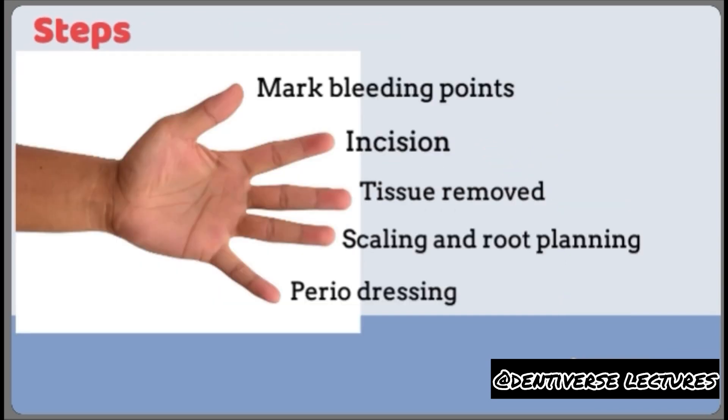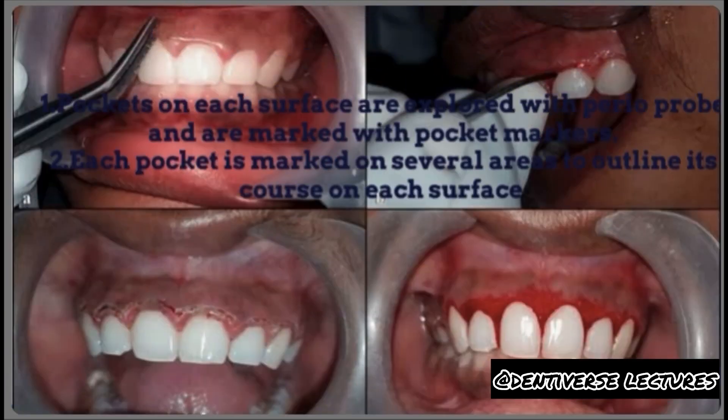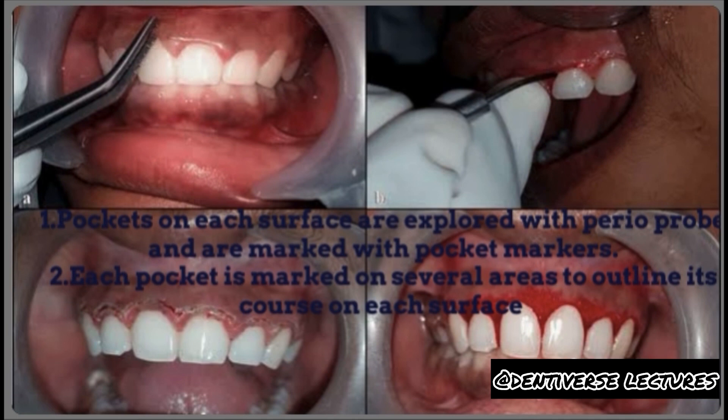Steps of surgical gingivectomy are as follows: mark bleeding points, incisions, tissue removal, scaling and root planing, and periodontal dressing. The first step is exploration of the pocket with a probe and marking with a pocket marker. Each pocket is marked on several areas to outline its course.